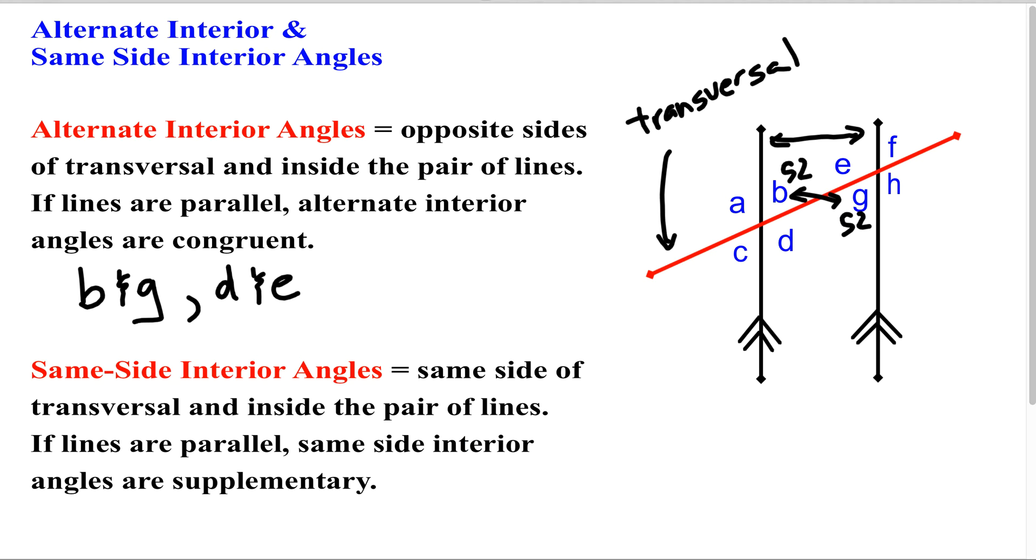So that's one type of angle. I'm going to erase this. We also have what we call same-side interior angles. The difference is they're on the same side of the transversal and inside the pair of lines. I'm going to use a different color now.